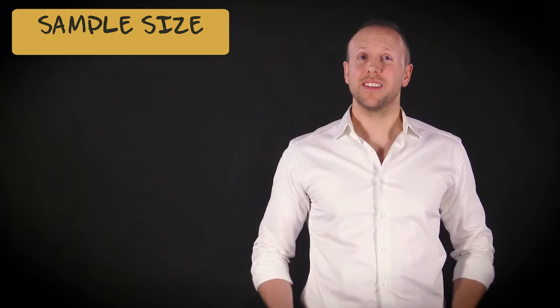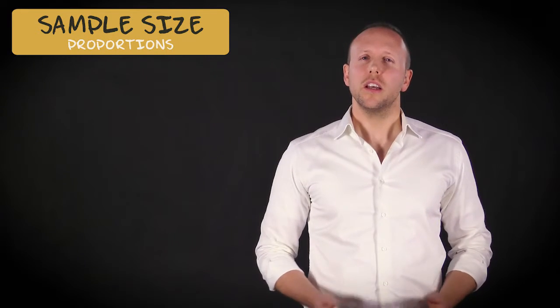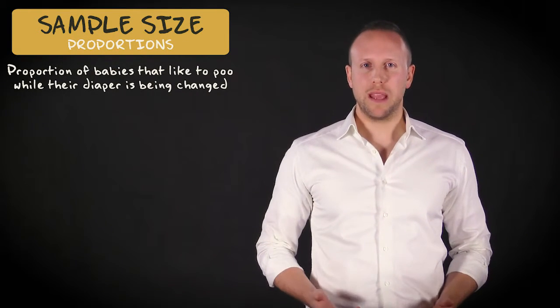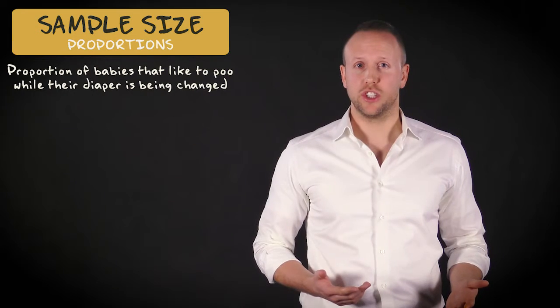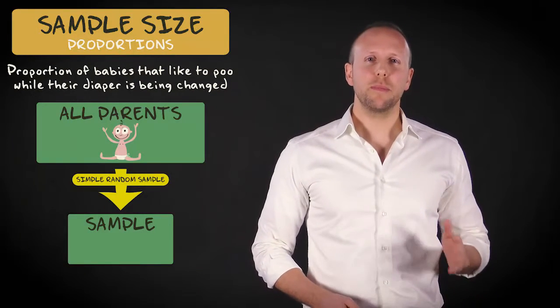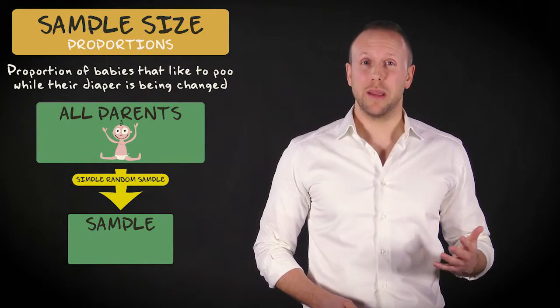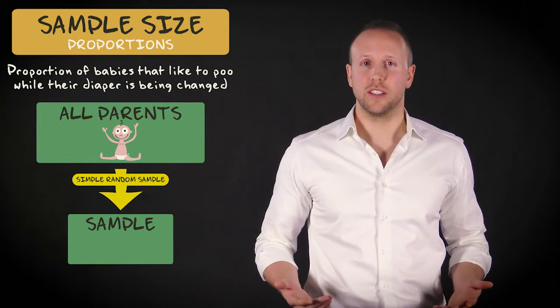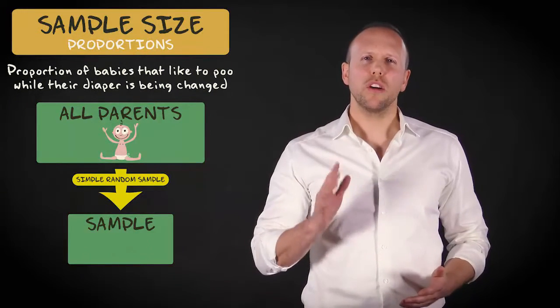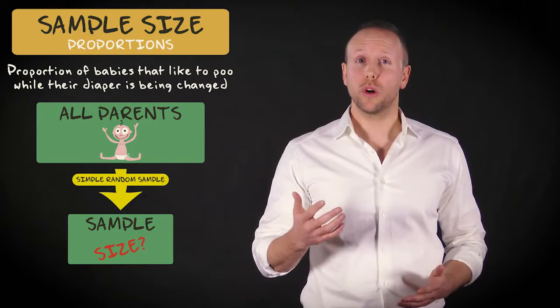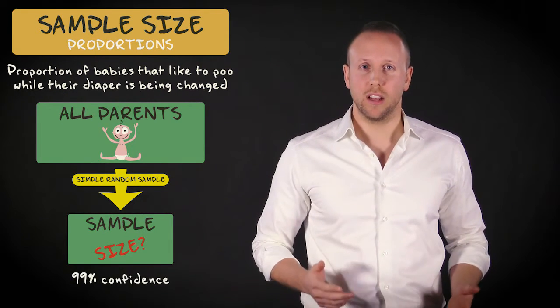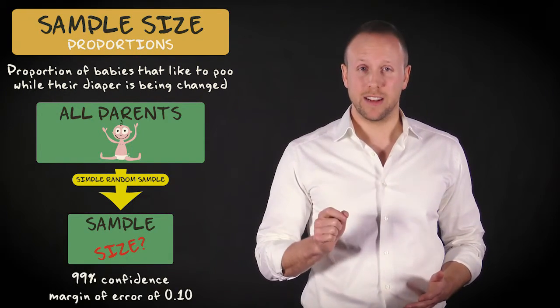We can also do this if we are interested in a proportion instead of a mean. Suppose I want to know the proportion of babies that like to poo while their diaper is being changed. I therefore ask a simple random sample of new parents if their babies like to defecate during the diaper changing process. How large should my sample size be if I want to work with a 99% confidence level, and I want to allow a margin of error of 0.10?